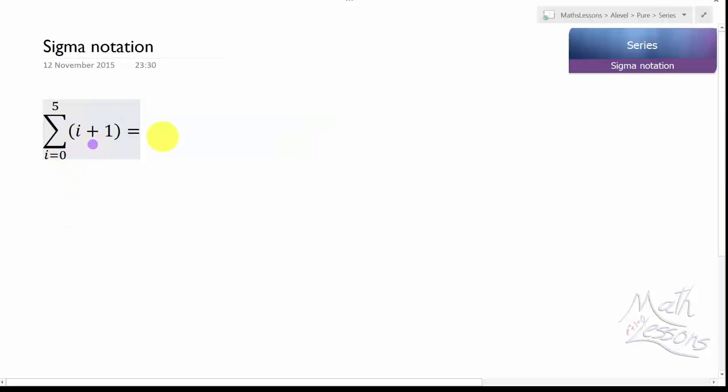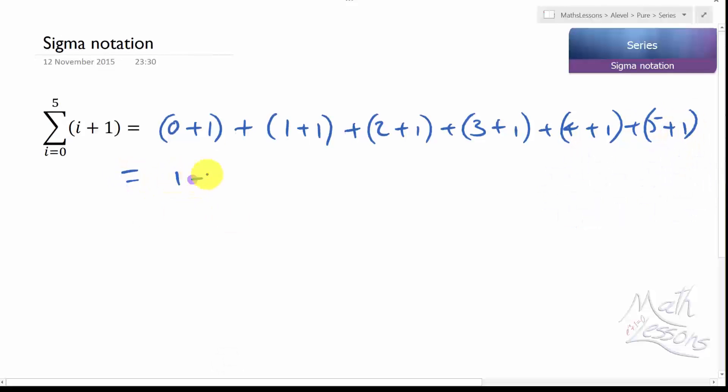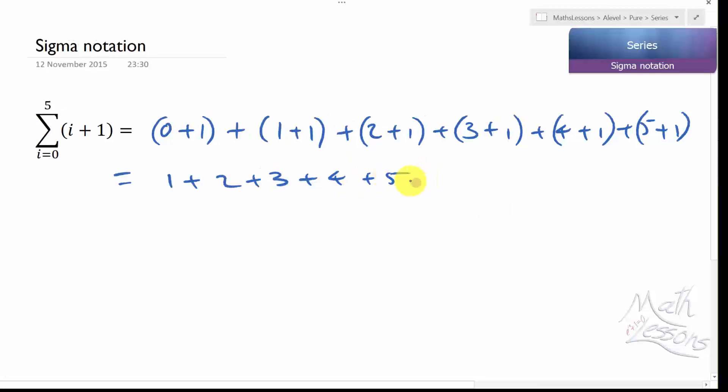So start off we put 0 into that. So you get 0 plus 1 is our first term. Then we add on to that our second term, put 1 into that, 1 plus 1. Then put 2 into it, 3, 4, and 5. And we end up adding up the numbers 1, 2, 3, 4, 5, and 6.